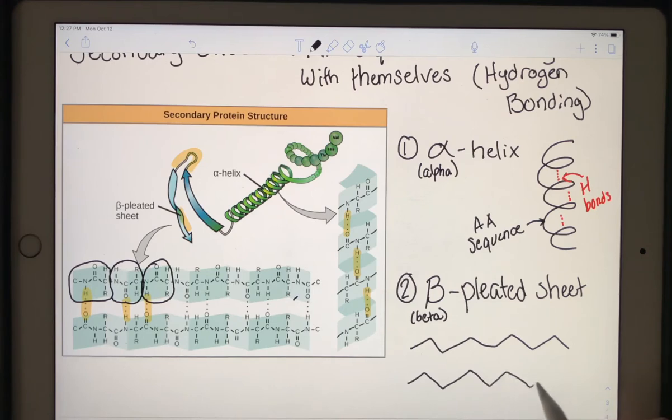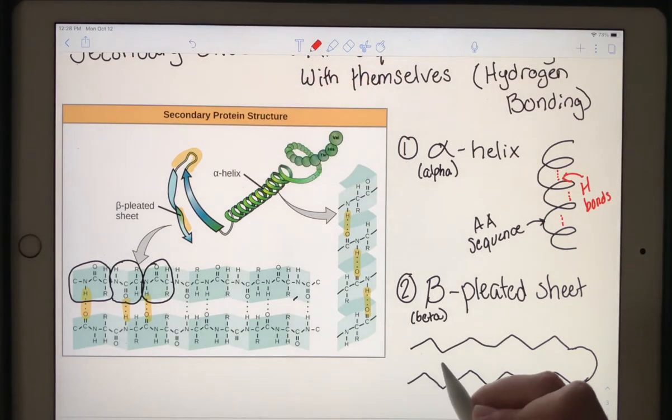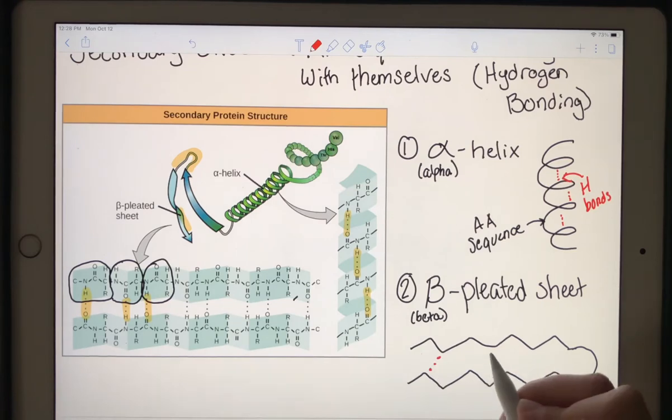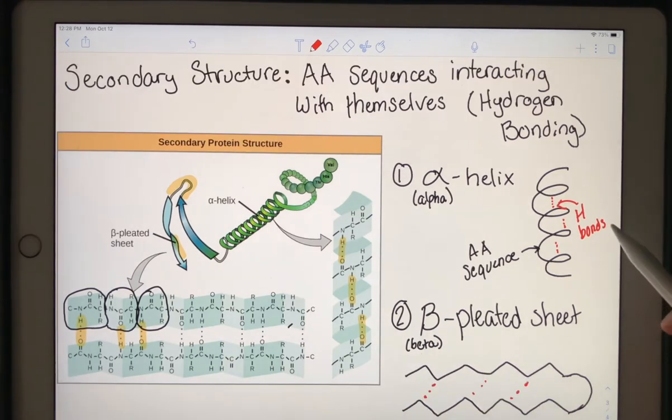So you have your amino acid sequence, maybe they're connected. So maybe this is all one sequence and then it's held together with some hydrogen bonds. Both shapes are created by hydrogen bonding.